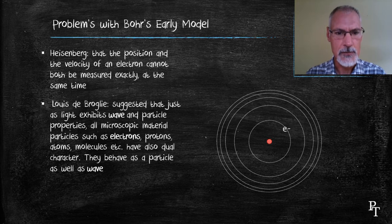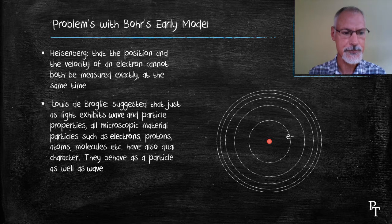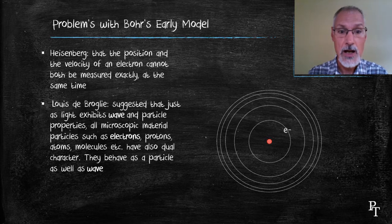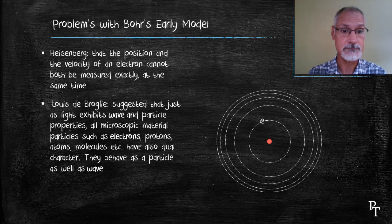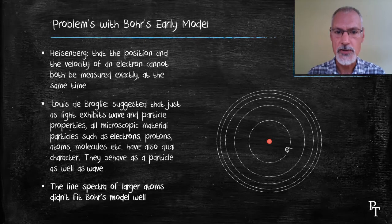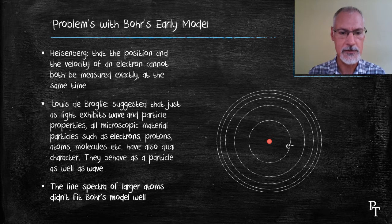Another problem that plagued the model was the development of what was called wave-particle duality. Louis de Broglie led the charge on this. Electrons, protons, atoms and molecules, in the realm of the very small, exhibited both wave and particle-like nature. This was similar to how light behaved. And finally, when one moved to larger atoms, the spectra became far more complex than could be explained by Niels Bohr's simple model.